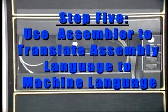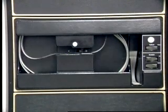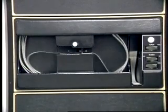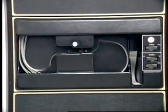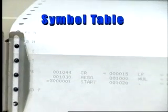Now we'll have the assembler translate our assembly language program into machine language. Keep in mind that this is a two-pass assembler. During the first pass, the assembler reads the source tape and simply constructs the symbol table. During the second pass, the assembler reads the source program again and generates the image and the listing. It's finished with the first pass and has just printed the symbol table.